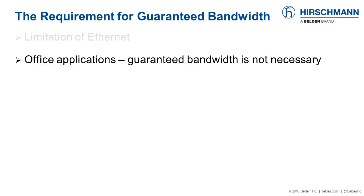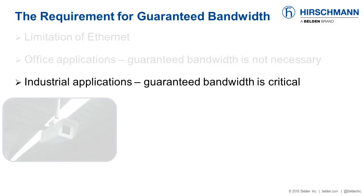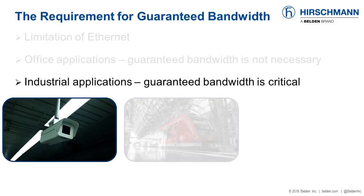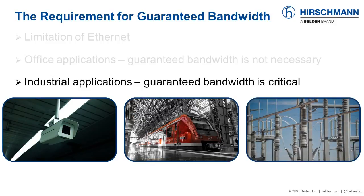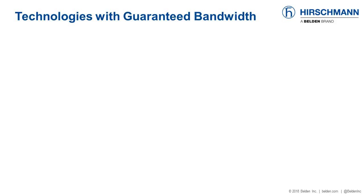In an office environment, the transmission of an email may be delayed by a large file transfer — it doesn't matter. In industrial communications, an application may be degraded or even fail due to the sudden loss of bandwidth. These applications include video surveillance systems, transportation networks such as trackside backbone communications, and substation to control room communications in the power transmission and distribution sector. In fact, the requirement for guaranteed bandwidth has always existed in wide area networking.